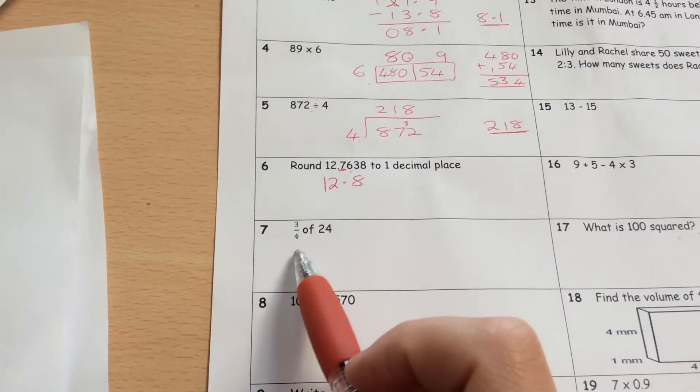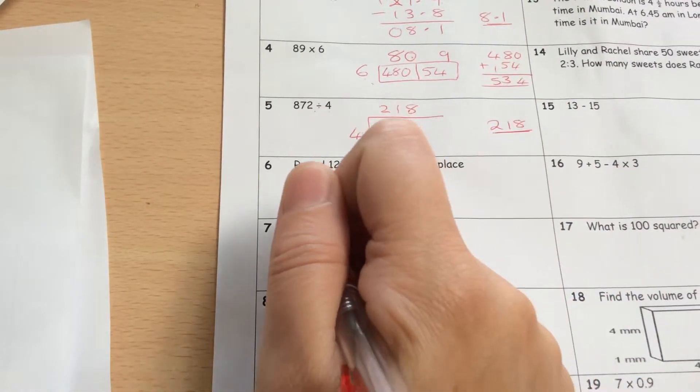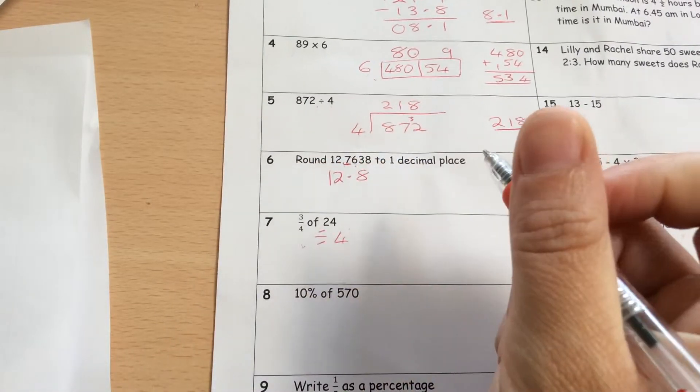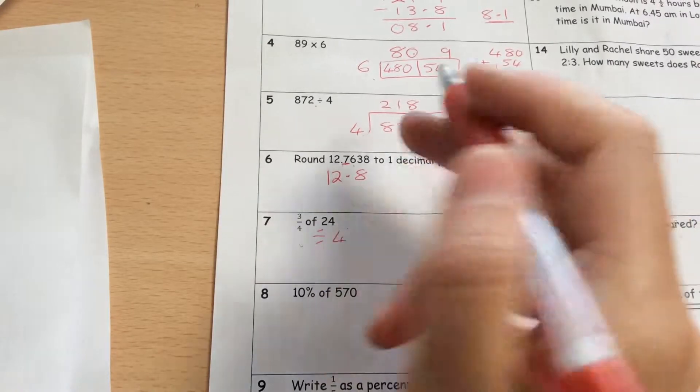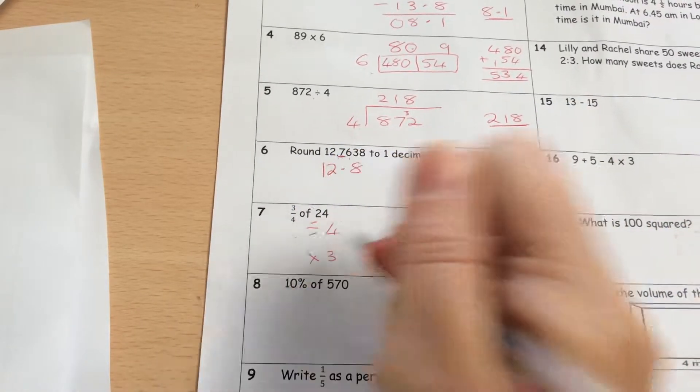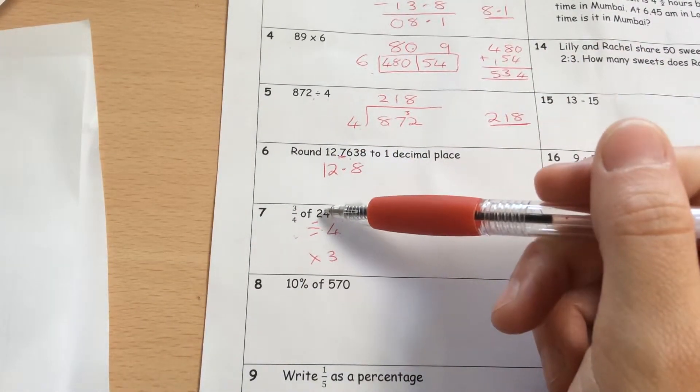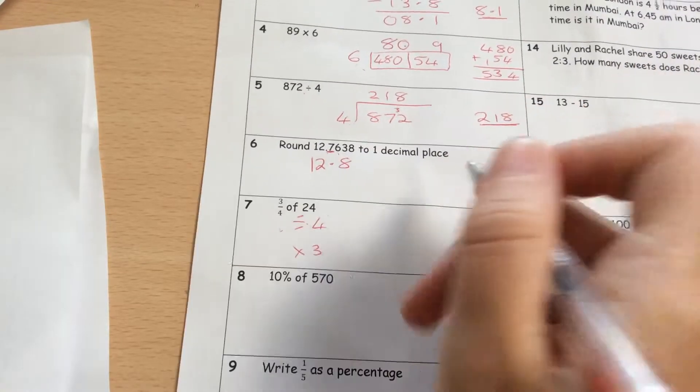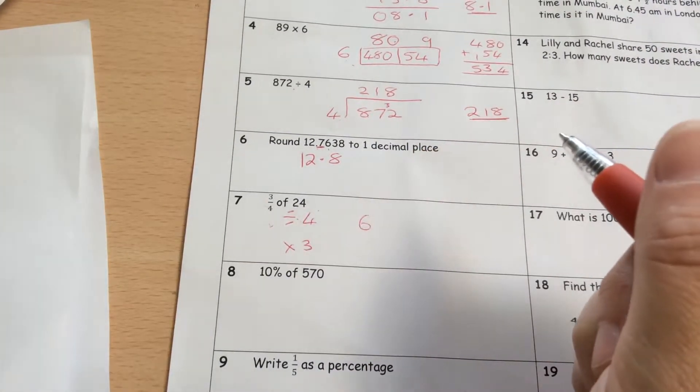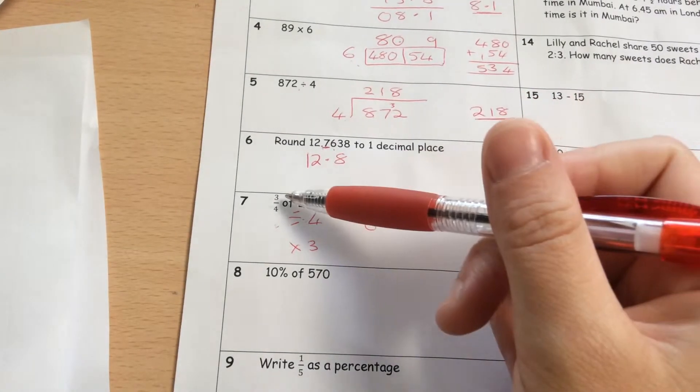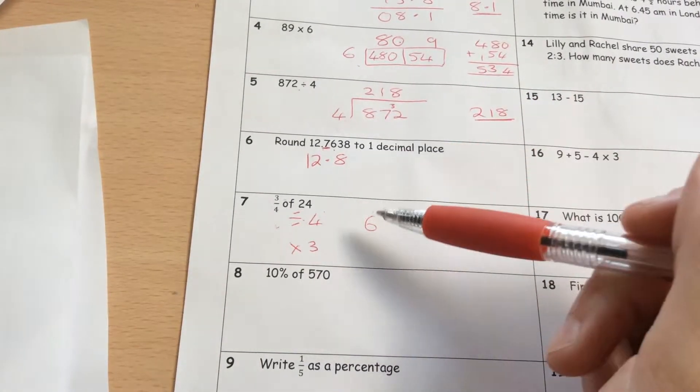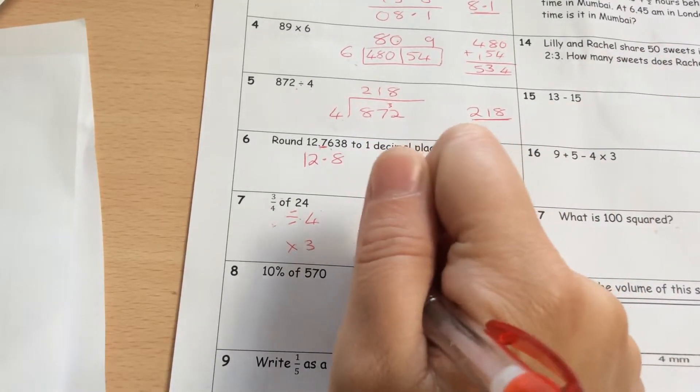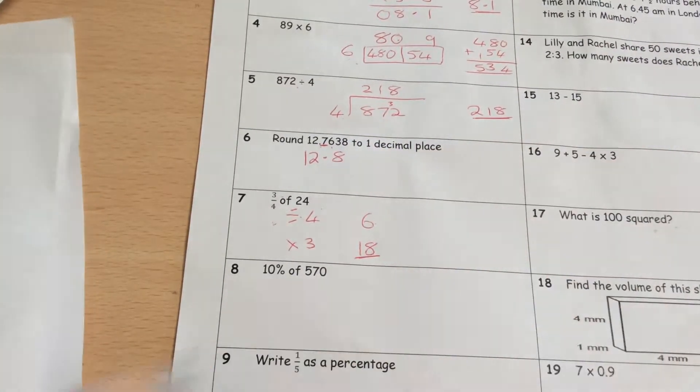Finding a fraction of an amount, the rule is you've got to divide by the bottom. So we would have to divide by 4. And you've got to times by the top. So then we would have to times by 3. Well if we divide by 4, if we share by 4, 4 goes into 24, 6 times. So that's 1 quarter. I'm on 3 quarters. So I would have to times that now by 3. 6 times 3, 18. So 3 quarters of 24 is 18.